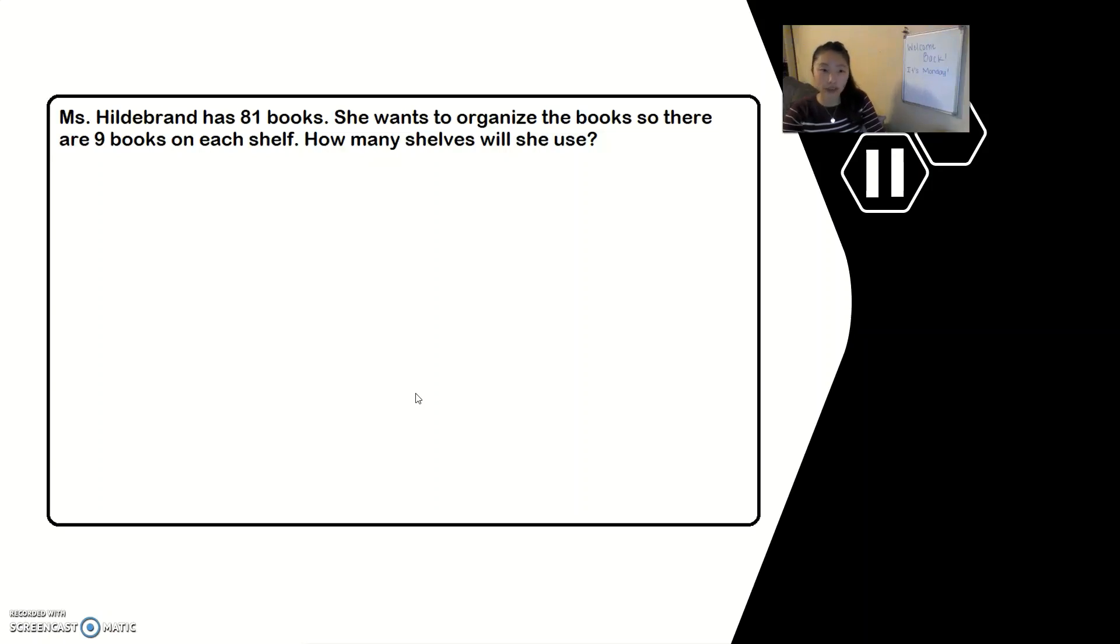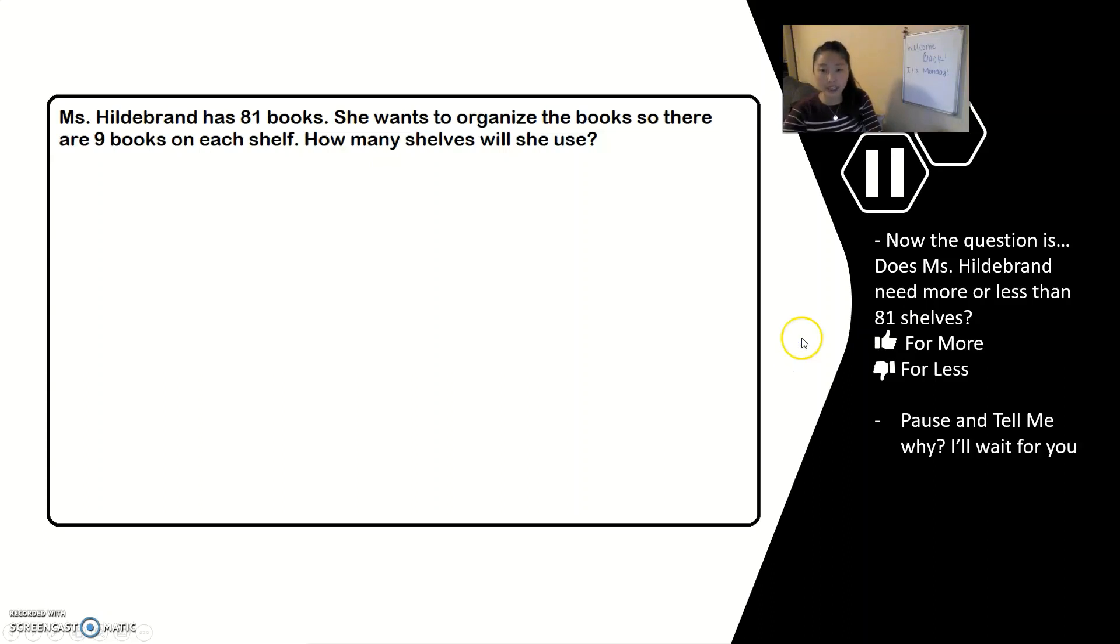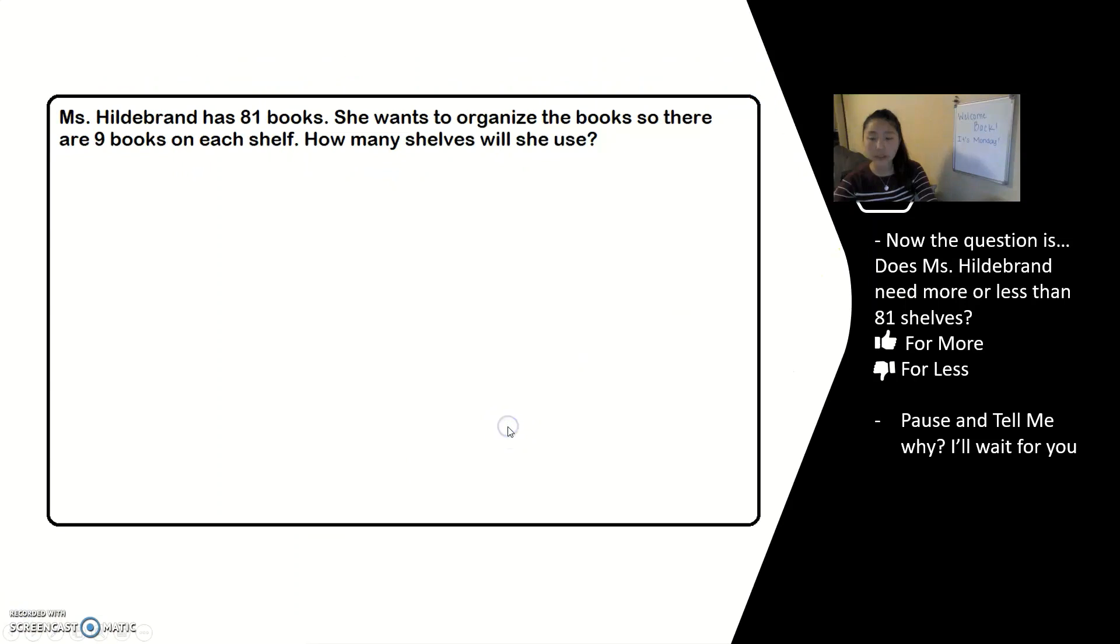This is the part where you think about what's going on in this problem. So after you read this question, now we're doing our more or less problem. Are you ready for your question? Our question is: does Ms. Hildebrand need more or less than 81 shelves? Do you think she needs to order way more than 81 shelves or less than 81 shelves? Think about it. I want you to show me right now more or less. More is a thumbs up. Less is a thumbs down. Pause and tell me why. Alright, I like your reasoning, so let's move on.